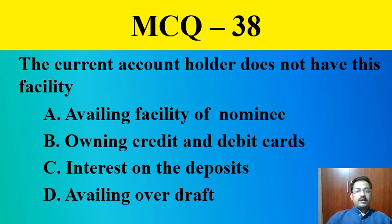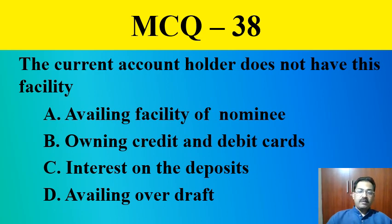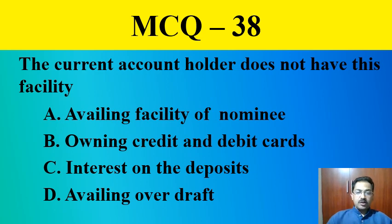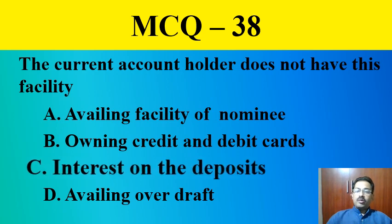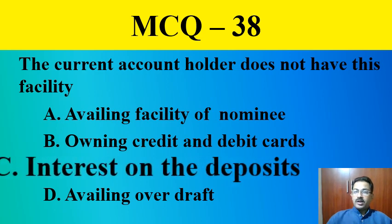MCQ question number thirty-eight: The current account holder does not have this facility — availing the facility of nominee, owning credit and debit cards, interest on deposits, or availing overdraft. The correct answer is interest on deposits. Current account holders do not get any interest on deposits made.